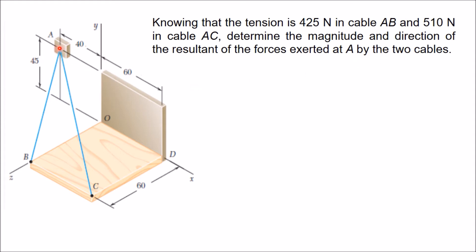Forces are acting at point A. In the first step, we have to determine the coordinates of points A, B, and C. The coordinate of A is (−40, 45, 0). For B, x and y are 0 and the z-coordinate is 60. For C, x is 60, z is 60, and y-direction has no distance, so y is 0.